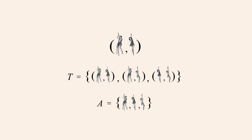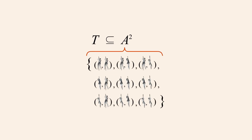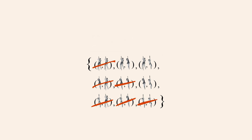Each ordered pair in set T makes a statement about how one person in set A is related to a person in the same set. This ordered pair makes the statement: Tarzan is T-related to Jane, or in plain English, Tarzan is taller than Jane. As we saw, a binary relation from one set to another is a subset of their Cartesian product. So T is a subset of the Cartesian product of set A with itself, or A squared. A squared contains all nine possible ordered pairs which can be created from the three members of set A. If we eliminate all ordered pairs of A squared whose first element is not a person taller than the second element, we get relation T.